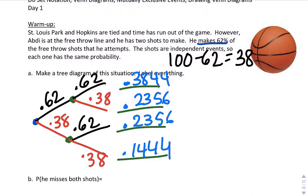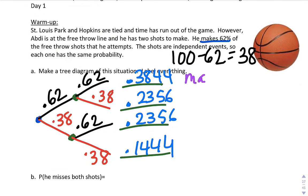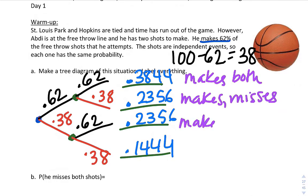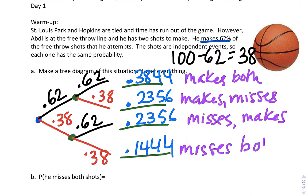All right, label everything so this is when he makes both, makes both, makes misses, misses makes, and this is misses both. And if you add them up, they add to 100% here.